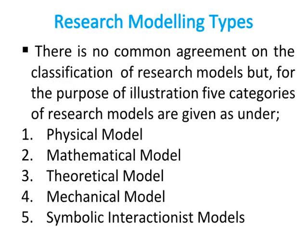Research modeling types: there is no common agreement on the classification of research models, but for the purpose of illustration, five categories are given. Number one: physical model. Number two: mathematical model. Number three: theoretical model. Number four: mechanical model. Number five: symbolic interactionist models.